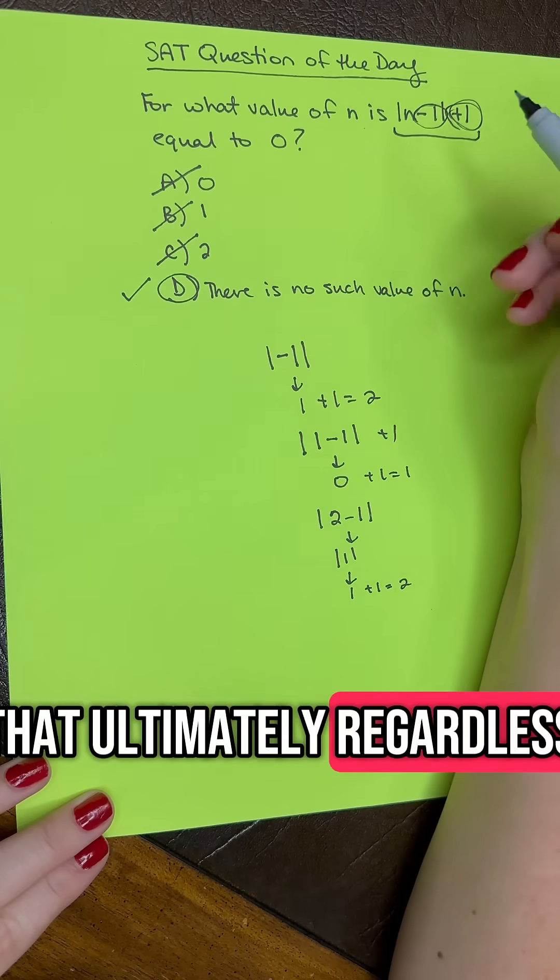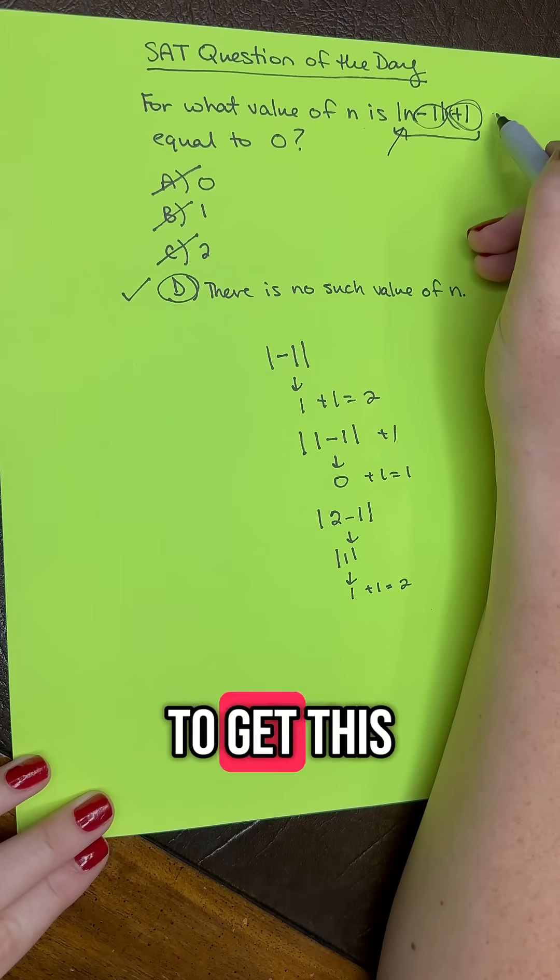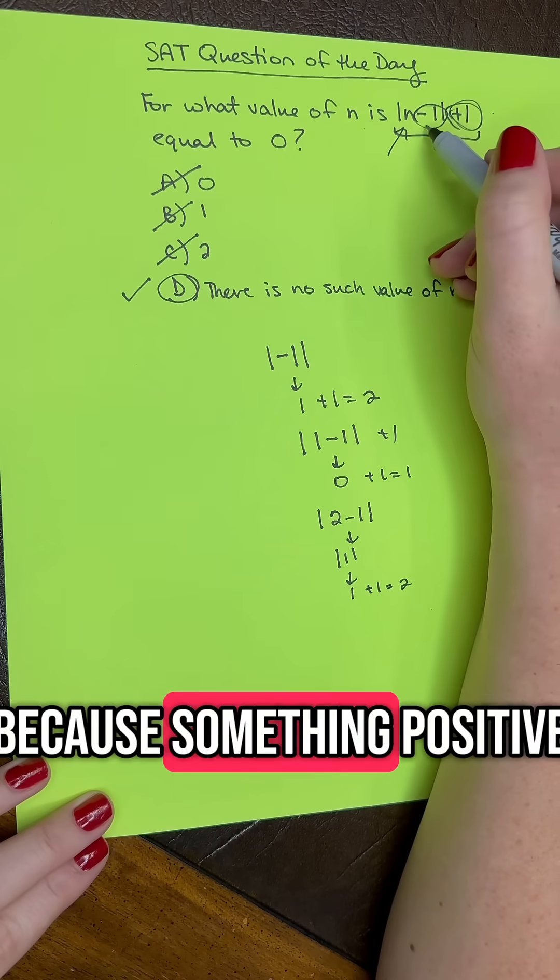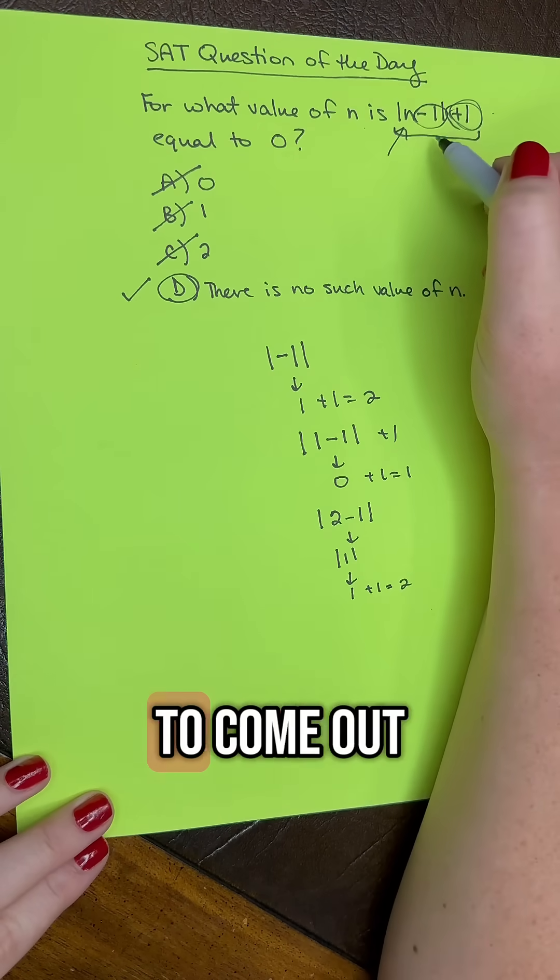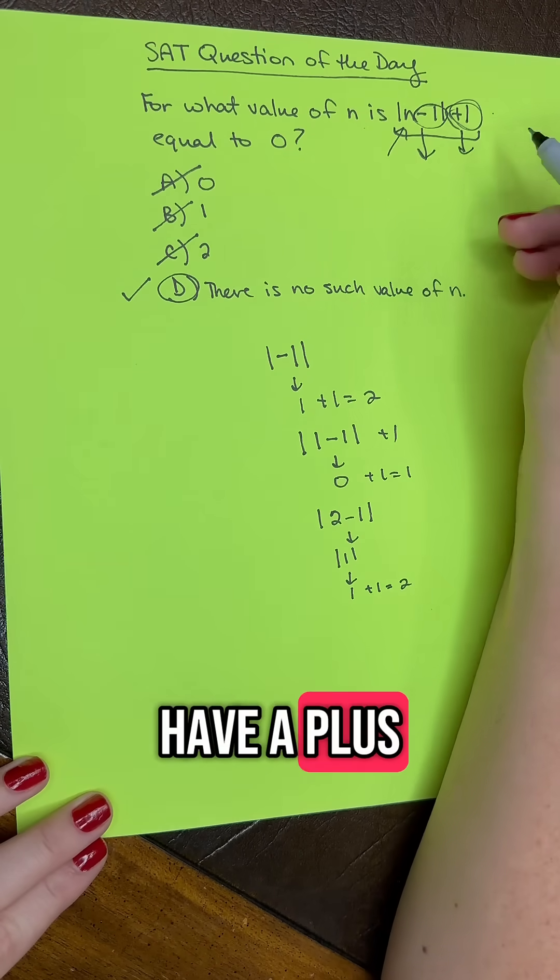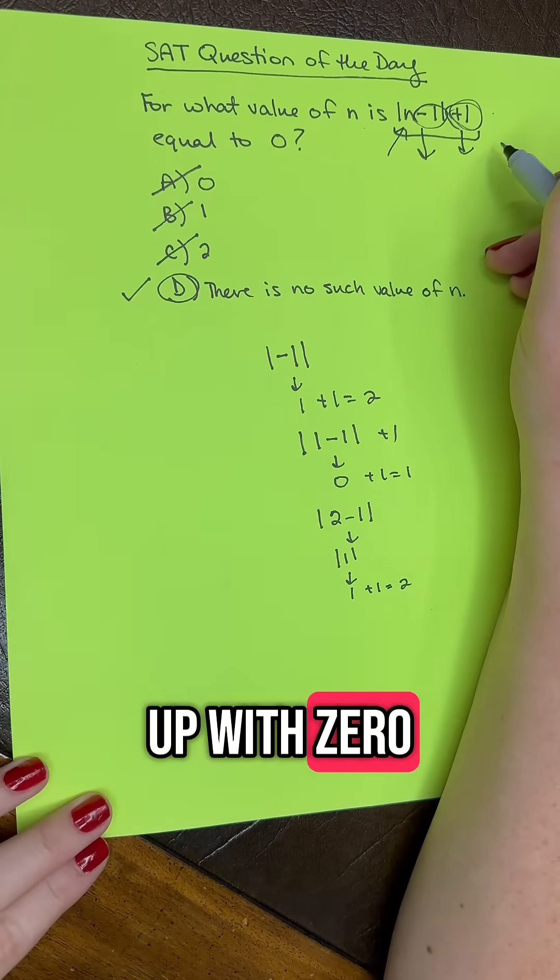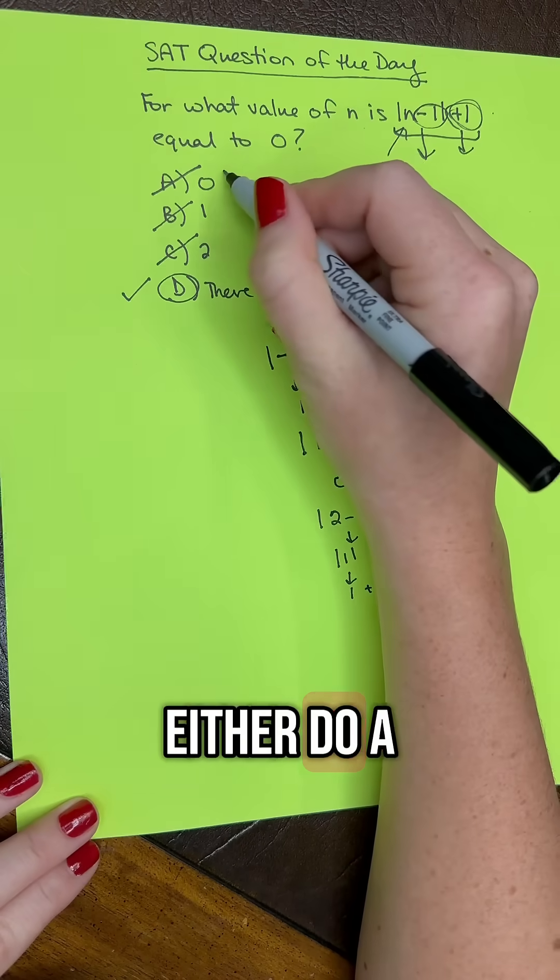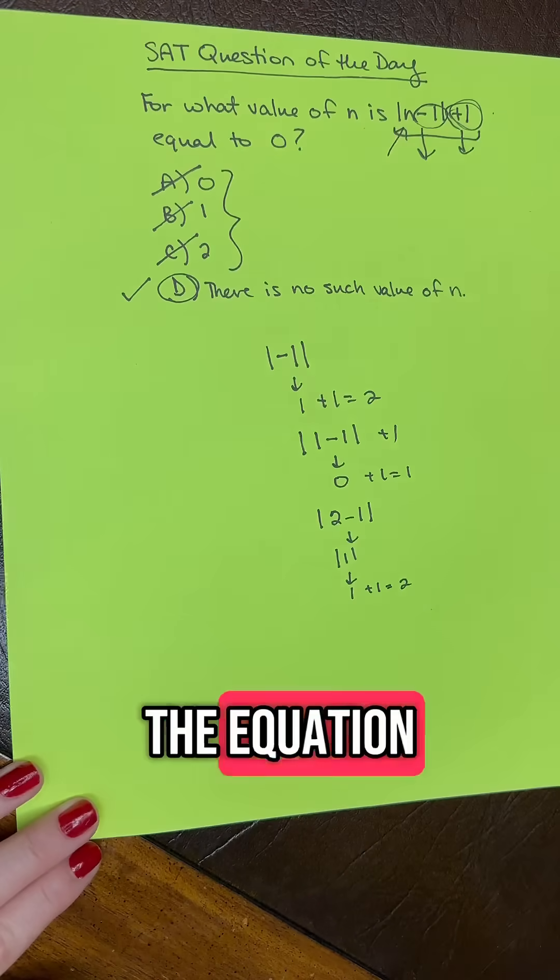Ultimately, regardless of what we plug in here, we're never going to be able to get this equation to 0, because something positive or at most 0 is going to come out of this first piece of the equation, and then you have a plus 1 here, so you're not going to end up with 0. So you can either do a plug-in approach here, or you can just think through the structure of the equation.